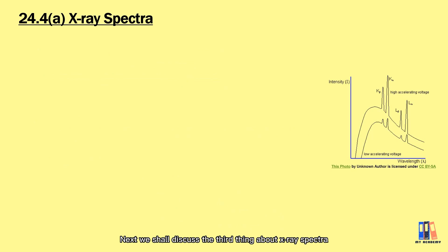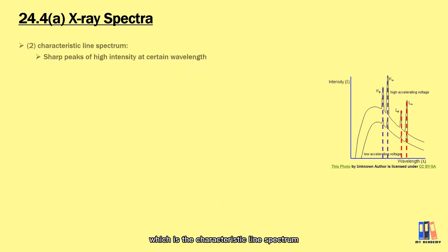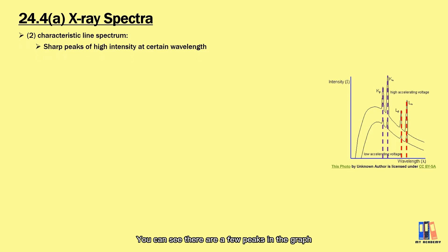Next, we shall discuss the third thing about X-ray spectra, which is the characteristic line spectrum. You can see there are a few peaks in the graph which shows that there is a high chance that X-rays with certain wavelengths are produced in the process. The term characteristic reflects that the wavelength is actually unique based on the type of target atom. This is why X-ray is often used to study the structure of crystalline materials.